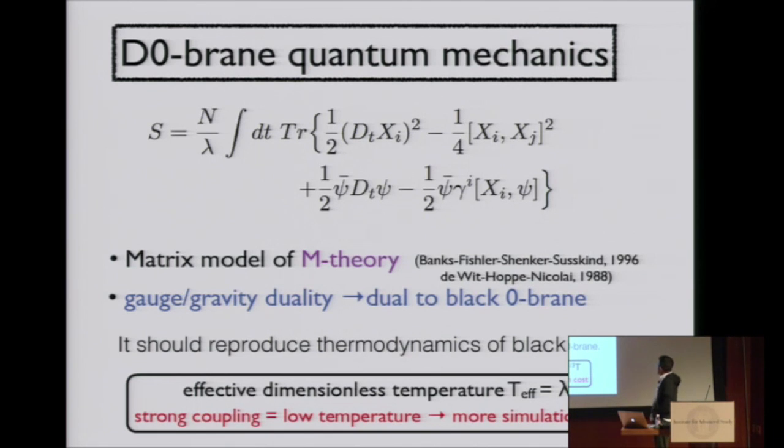Effective dimensionless temperature is λ^(-1/3) times T. When λ is large, then T effective is small. It's equivalent to smaller T. So strong coupling is equivalent to low temperature, and their simulation cost increases. Anyways, we have to go to the region where computation becomes hard. There is no free lunch.